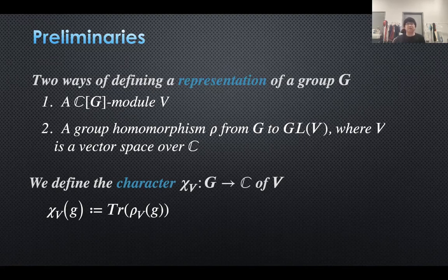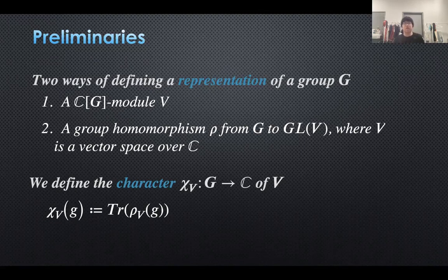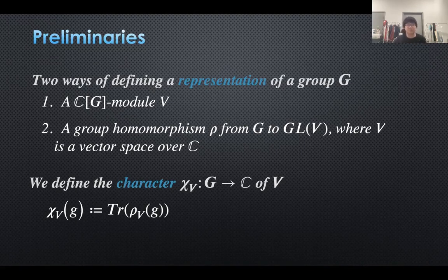The second definition is great here, because with it we can define what the character is. Since rho is a group homomorphism from G to GL(V), we know rho(g) is an element of GL(V), which means rho(g) is an invertible linear map from V to V. Simply compute its trace, and we finally get the character.